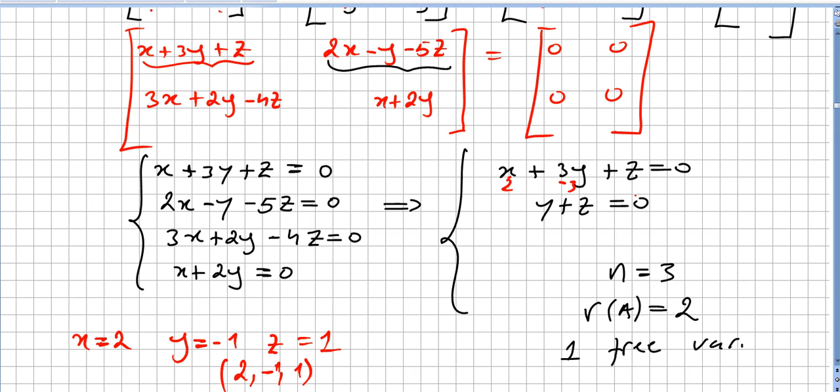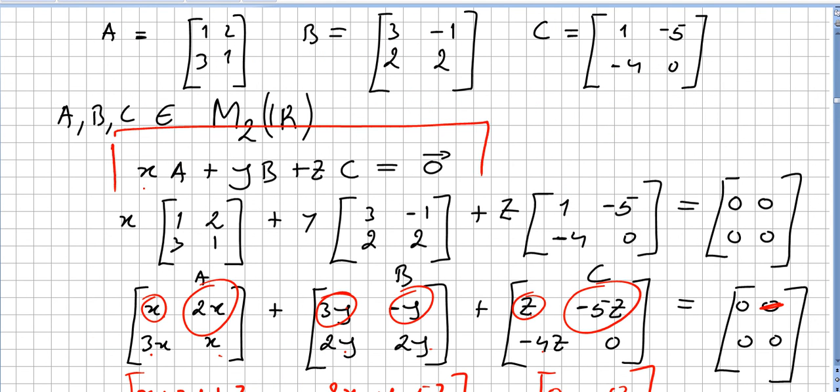So, the matrices are linearly dependent. We have a solution for this x, this y, and this z, where we get 0. And not all of these are 0. Our solution was, for x, it was 2. If y is minus 1, and if z is 1, you get 0, and not all of these are 0. So, the matrices are clearly dependent.